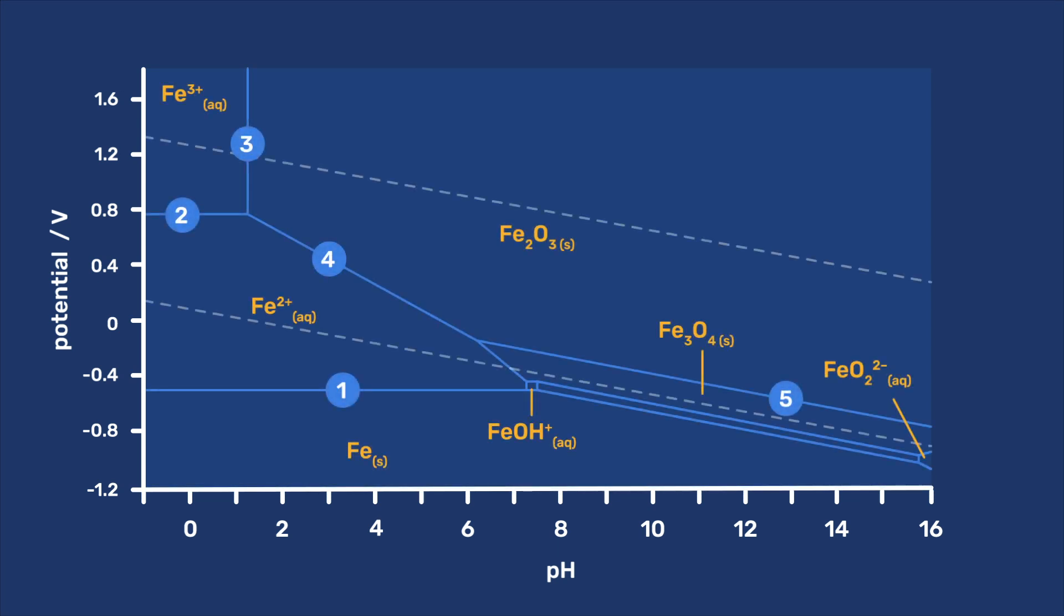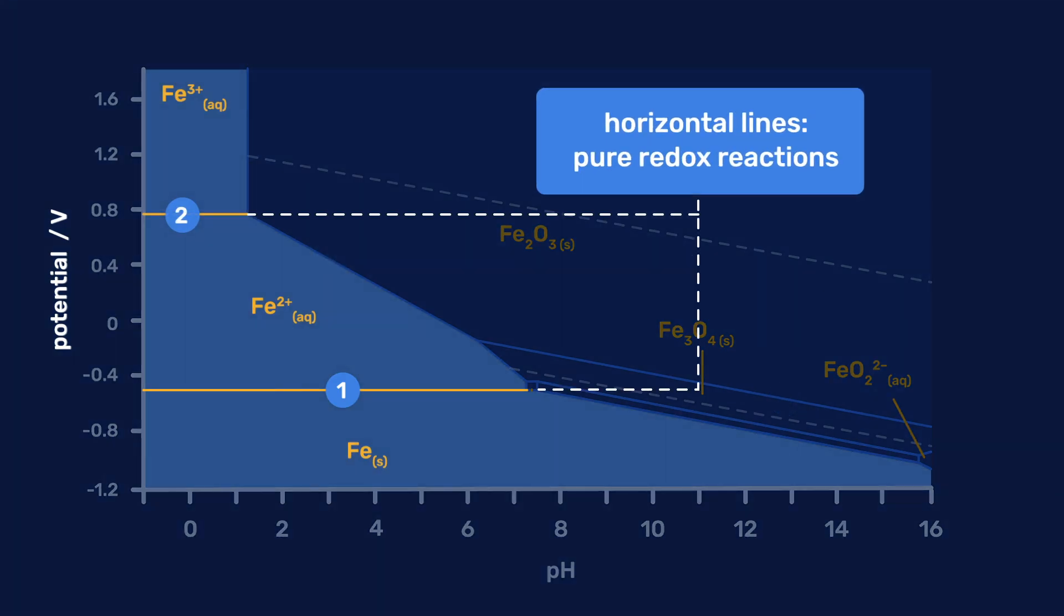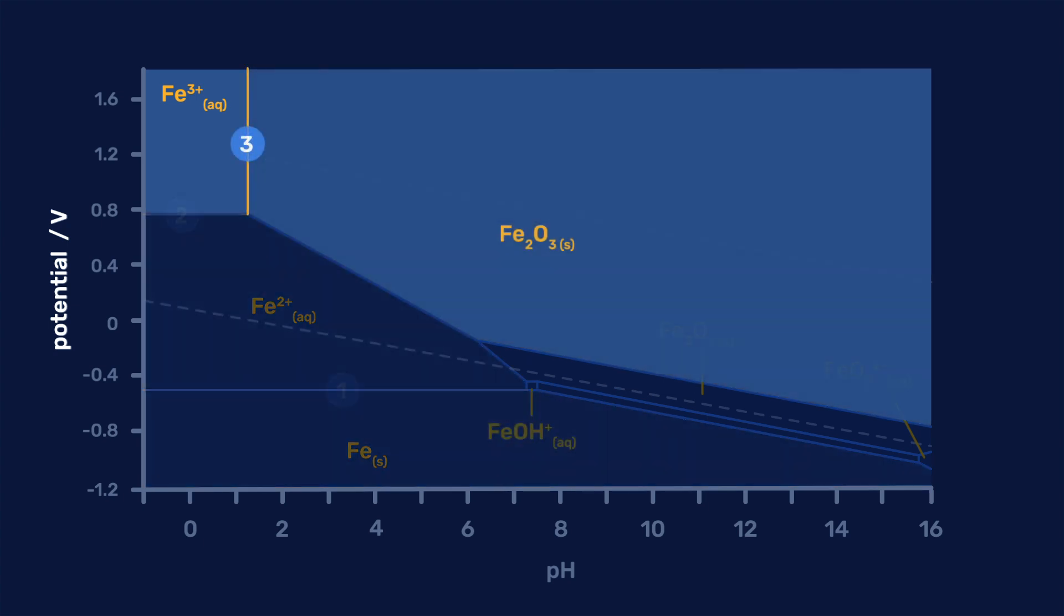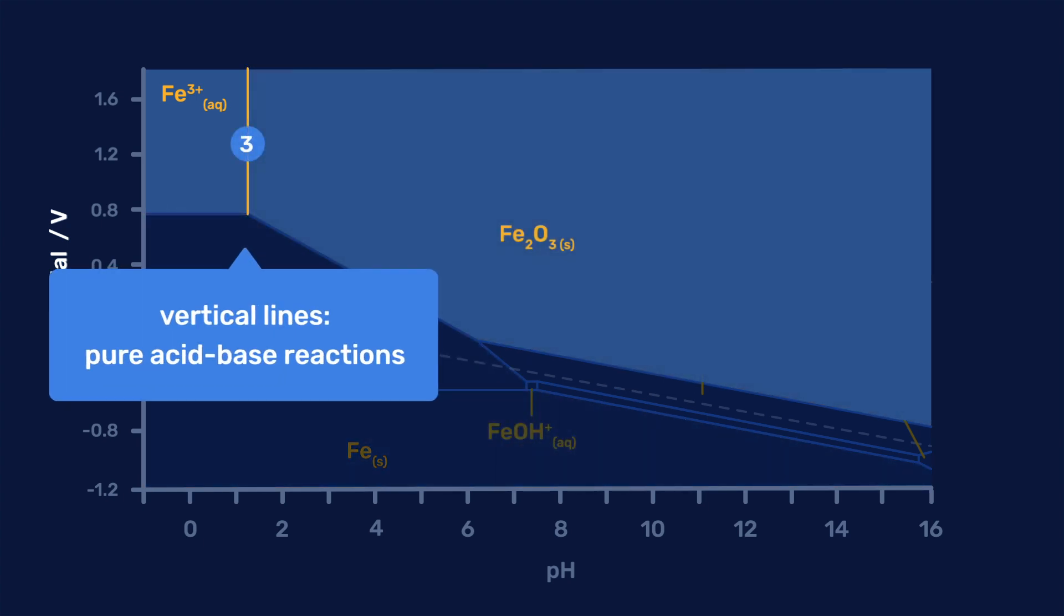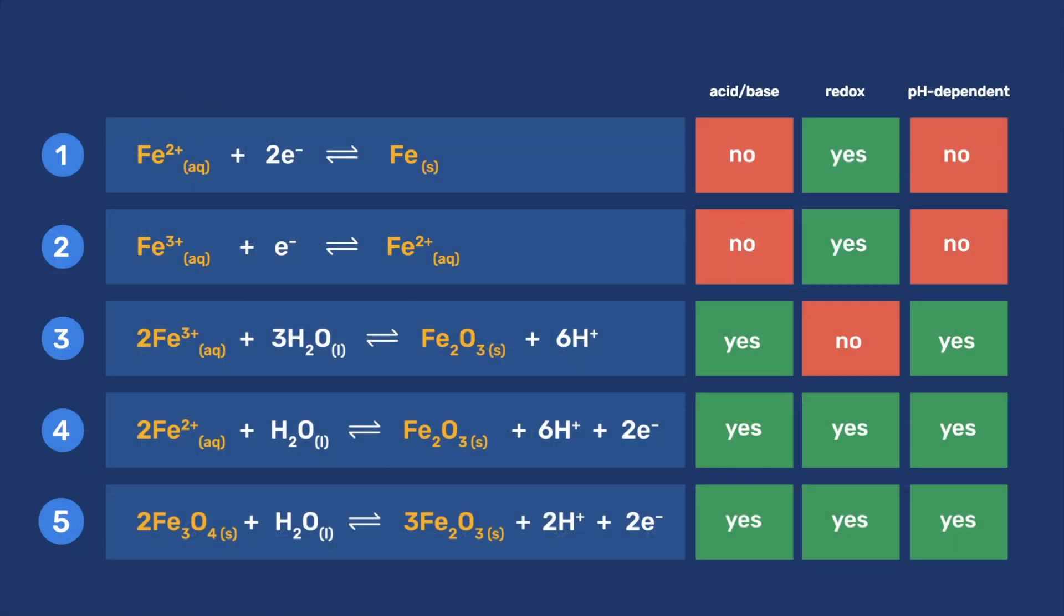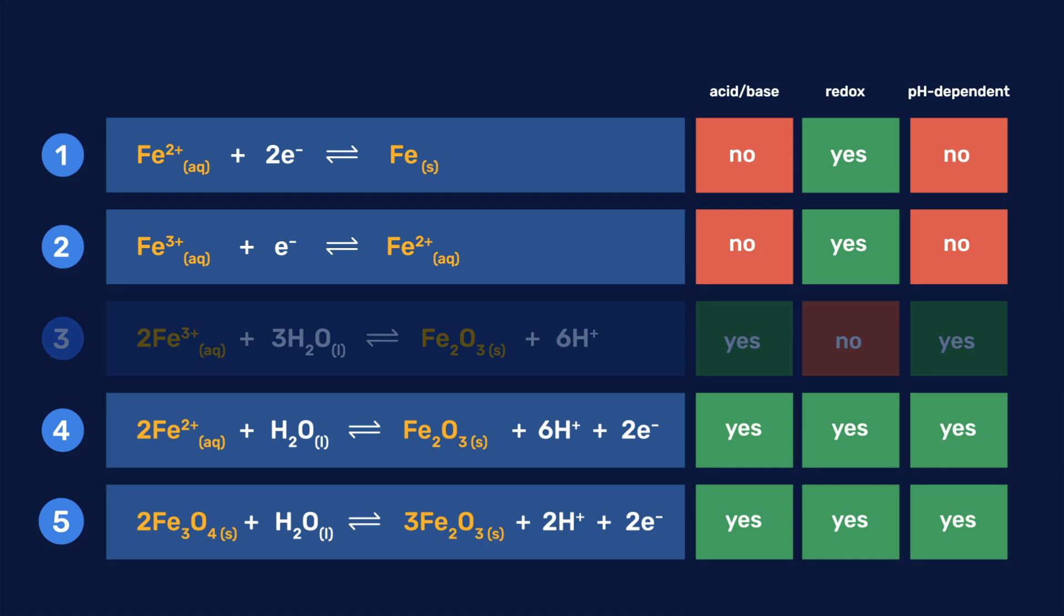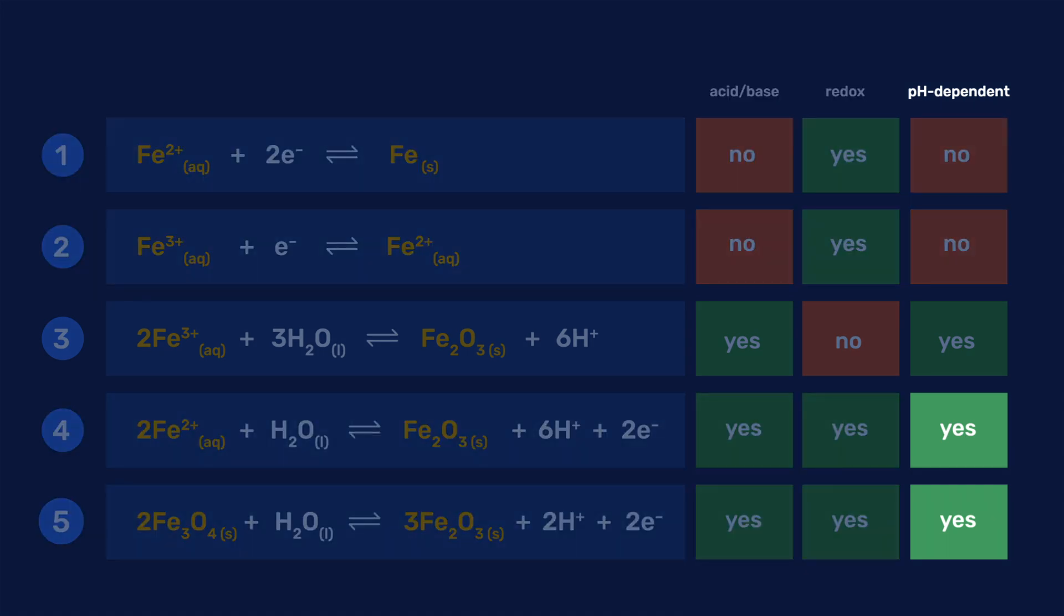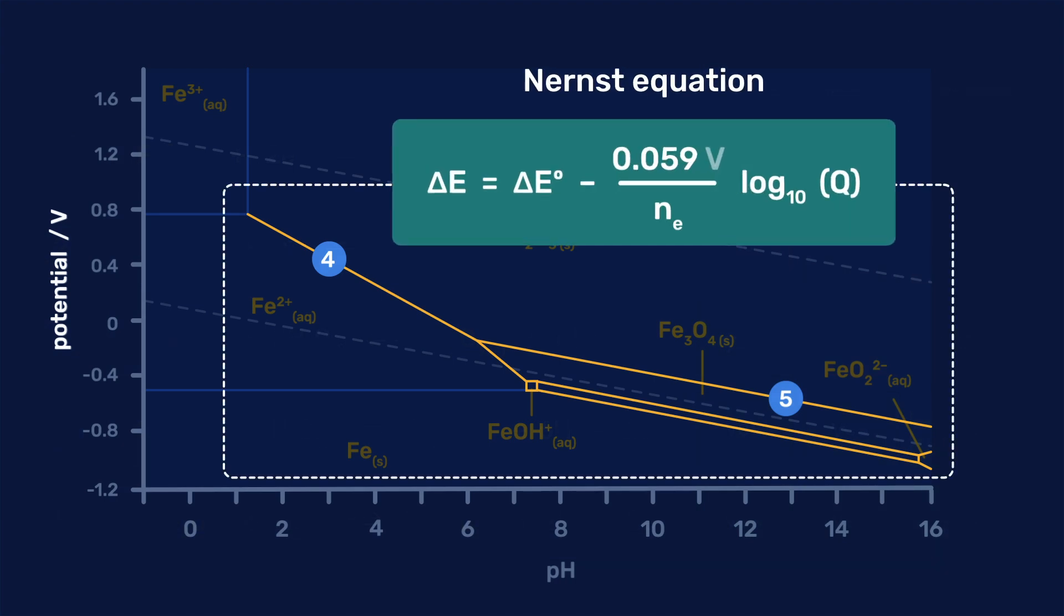In summary, Pourbaix diagrams are plots of potential versus pH, which define the electrochemical stability of an element in a specific environment. Horizontal lines represent pure redox reactions. Vertical lines represent pure acid-base reactions. And sloped lines represent combinations of both acid-base and redox reactions. For the redox reactions, the pH dependence of the potential can be derived from the Nernst equation. Pourbaix diagrams are convenient for determining conditions at which corrosion can or cannot take place.